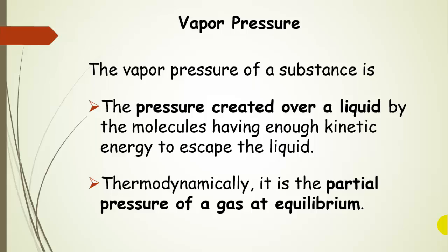The vapor pressure of a substance is defined as the pressure that's created over a liquid by molecules having enough kinetic energy to escape that liquid. When molecules have enough kinetic energy to escape the liquid, they'll enter the gas phase. Thermodynamically, we say it's the partial pressure of a gas at equilibrium. We'll be talking about equilibrium in a couple of weeks, but right now we're going to explain this concept of vapor pressure.